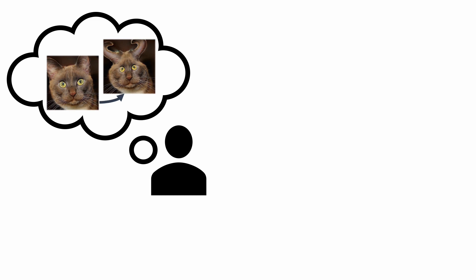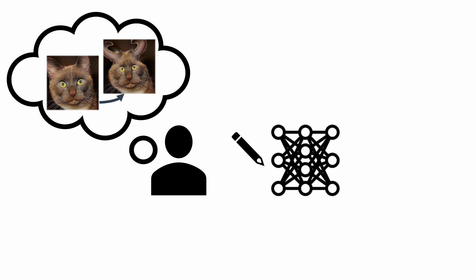But warping one image only creates one example of a new creature. In our work, we enable something new. By warping a whole generative model, instead of just one individual new creature, we can create a whole new species of virtual creatures.